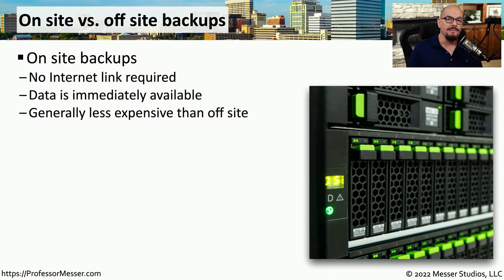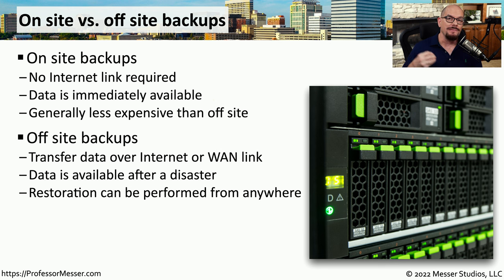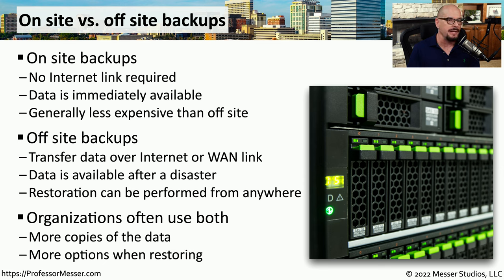One way to store data is to have all of your backups occur on site. This means you won't need any type of internet or wide area network link. The data you're backing up is immediately available to you and generally it's less expensive than having an offsite backup system. For an offsite backup, we need some type of network connection — a wide area network or internet link. We also have to make sure we can retrieve that data if needed. Since this data is stored offsite, you could effectively restore it to any system regardless of where you happen to be. In practical terms, many companies combine these so that some data is stored on site and some is stored offsite, giving you multiple copies and more options when it comes time to restore.